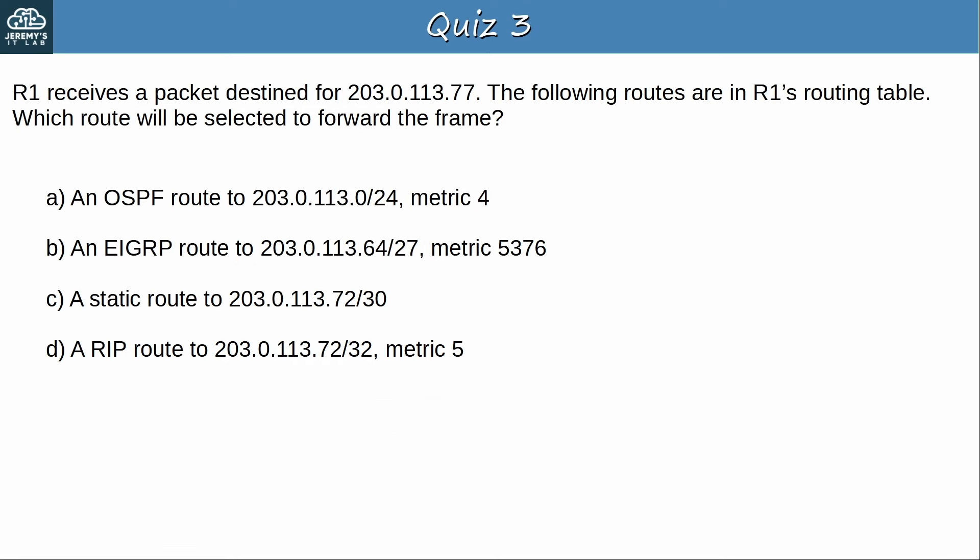Quiz question 3: R1 receives a packet destined for 203.0.113.77. The following routes are in R1's routing table — which route will be selected to forward the packet? The answer is B, an EIGRP route to 203.0.113.64/27. Of the 4 options, only A and B match the destination. 203.0.113.77 is not included in C (203.0.113.72/30) or D (203.0.113.72/32). Since the /27 prefix in B is longer than the /24 in A, B is the best route. The routing protocol and metric are not relevant — only the matching route with the longest prefix length, the most specific match.